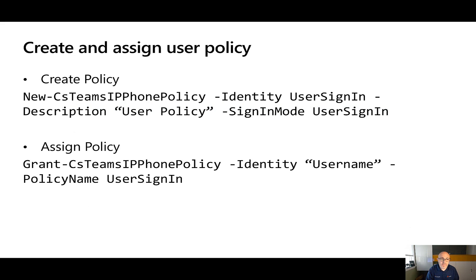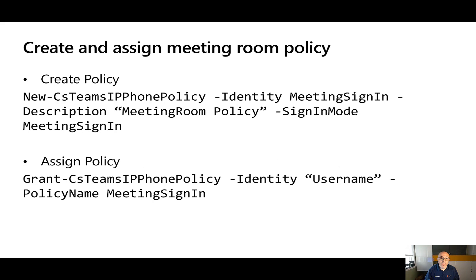To create those policies, there are two: one for user sign-in and one for meeting sign-in. In this example, we're creating our policy — this is a one-time thing — and calling it user sign-in. To assign that policy, we grant it against a specific username with the policy name user sign-in. Similarly, we can create a meeting room policy called meeting sign-in and grant that policy to a specific username, which would typically be a room system account.